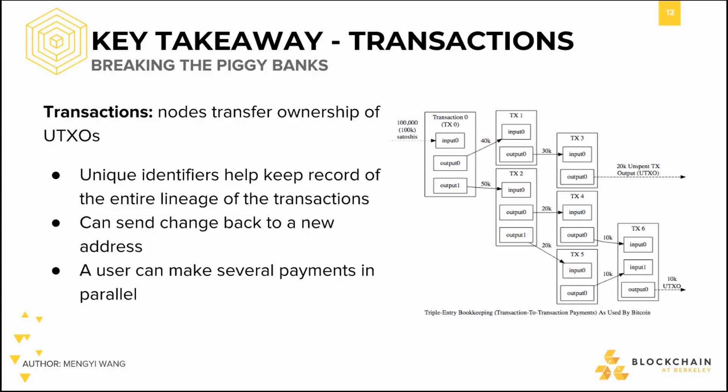Bitcoin doesn't have the account balance model that banks have. Instead, users spend outputs from previous transactions. These specific outputs are called unspent transaction outputs, or UTXO. The total value of bitcoins you have is the sum of all of your UTXOs. These UTXOs are uniquely identifiable and make tracking payments at the protocol level much more straightforward, because the UTXO record system makes it easy for nodes to see how funds have changed hands between users. The UTXO model might not be the most intuitive model, but it works well for Bitcoin from an architectural standpoint.